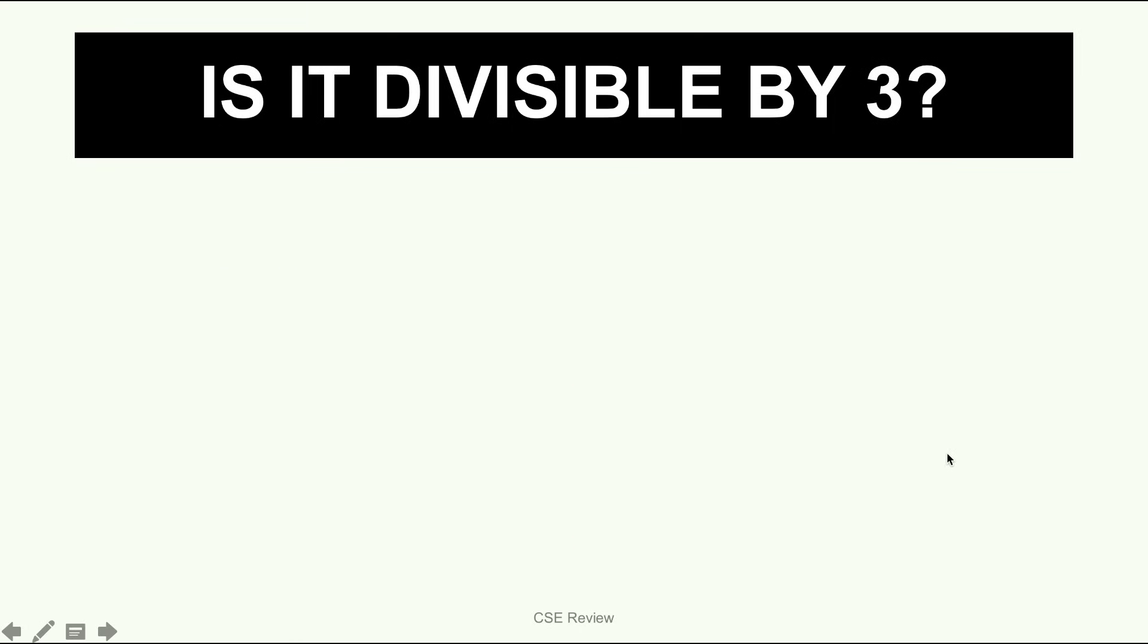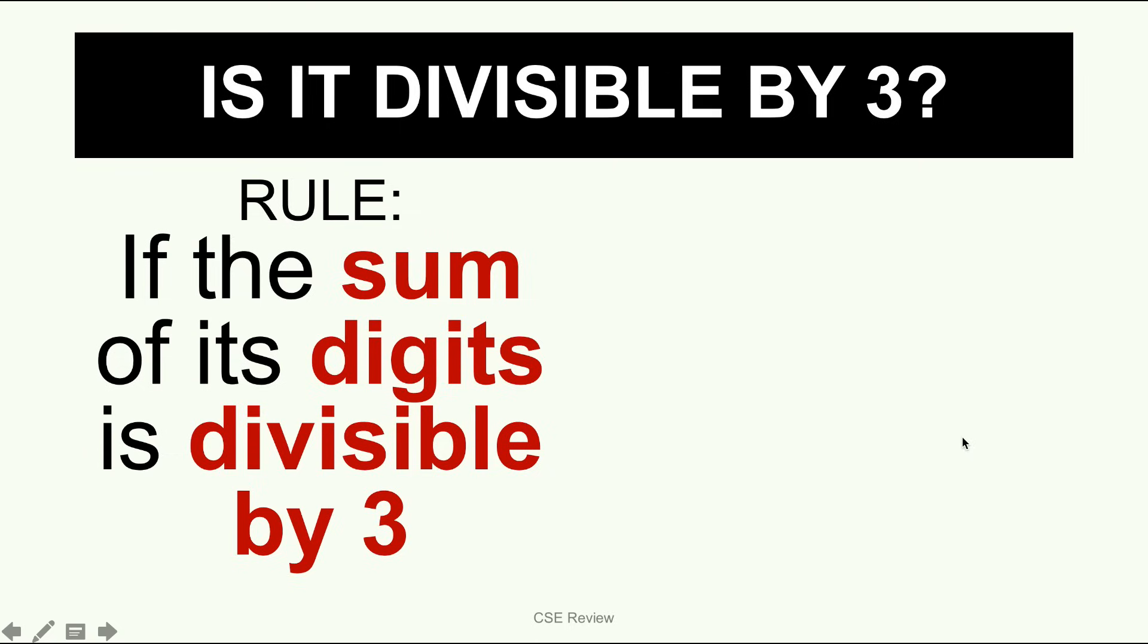Now, this is a little bit trickier, but I know you can figure it out. A number is divisible by 3. Ito ang rule. The rule is, if the sum of its digits is divisible by 3. Now, a few things I need to point out. If the sum of its digits, what do you mean? Bawat isang digit, ia-add mo siya together to get it. And then, yung mismong sum, yung pinagdugtong-dugtong, yun ang magiging rule dun based if it's divisible by 3.